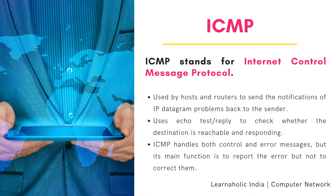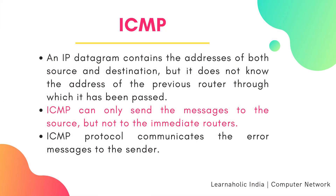ICMP stands for Internet Control Message Protocol. ICMP is a network layer protocol used by hosts and routers to send notifications of IP datagram problems back to the sender. ICMP uses echo test or reply to check whether the destination is reachable and responding. ICMP handles both control and error messages, but its main function is to report errors but not to correct them. An IP datagram contains the addresses of both source and destination, but it does not know the address of the previous router through which it has been passed.